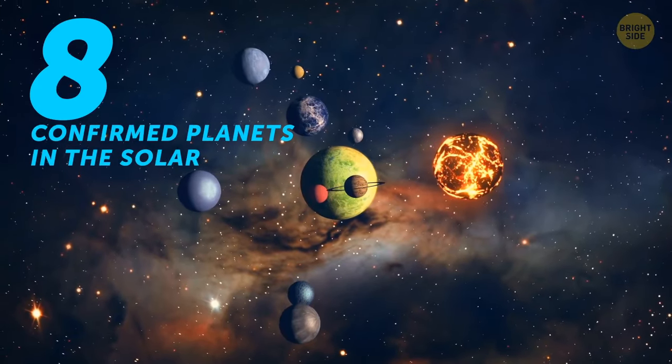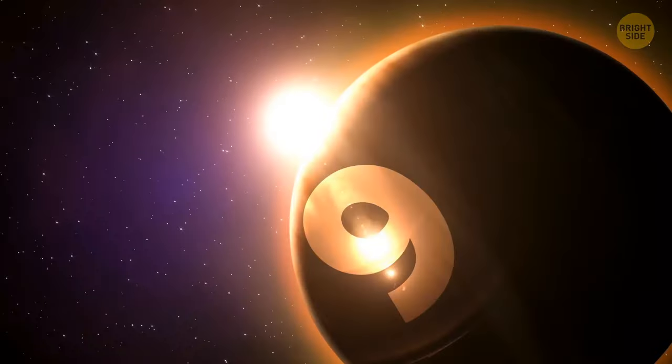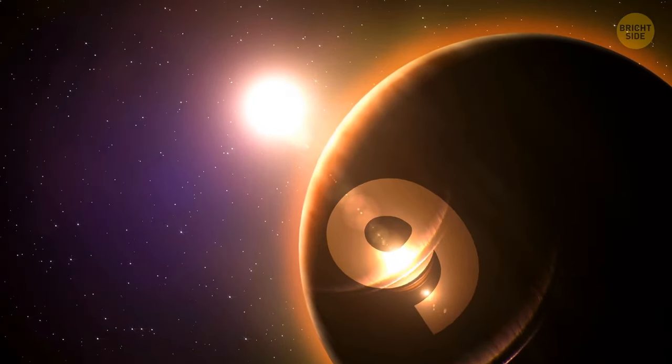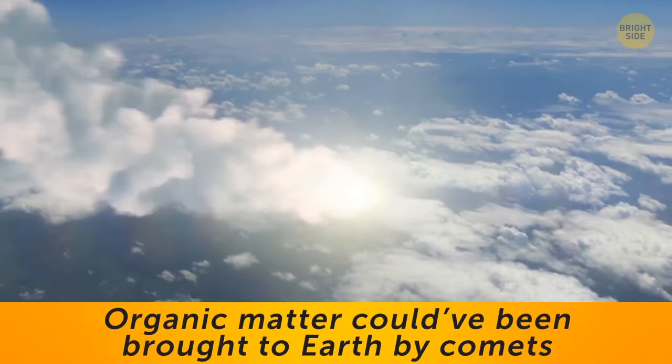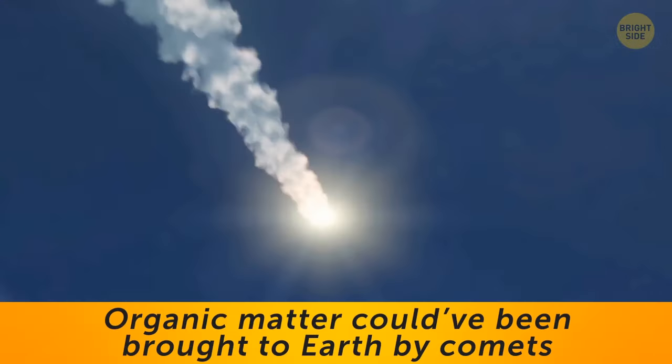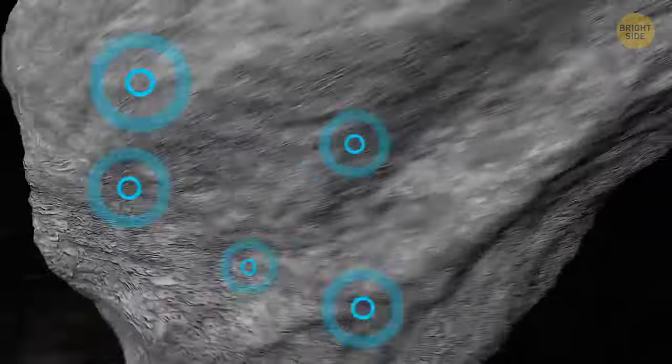There are eight confirmed planets in the solar system, but evidence shows there can be a ninth, we just haven't discovered it yet. Organic matter could have been brought to Earth by comets, since it has been found on several of them.